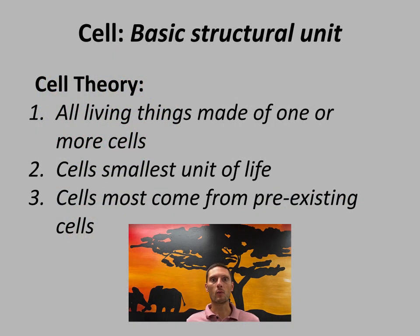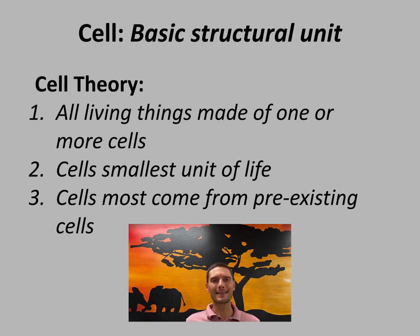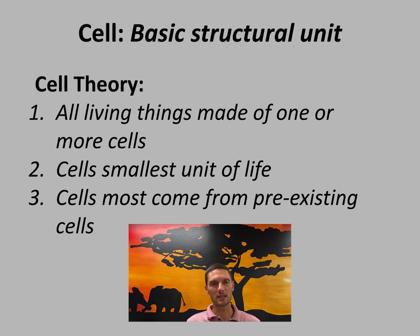All living things are made up of one or more cells. Cells are the smallest unit of life, and they come from pre-existing cells. Although there are some cells that don't quite fit with cell theory, that theory is not rejected — there are just some outliers. In biology, there are established rules and expectations, but there always seems to be something that doesn't quite fit. We'll talk about some examples of cells that are atypical in terms of the theory.